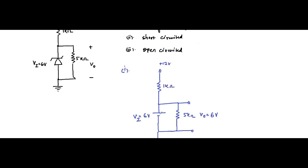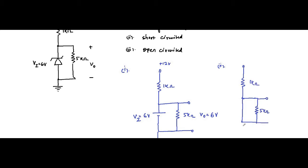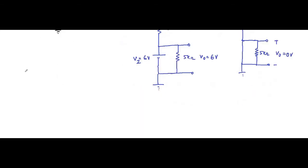When it is short circuited, in the second case, we replace the zener diode with a short circuit. Here it means that the output voltage is equal to zero volt.